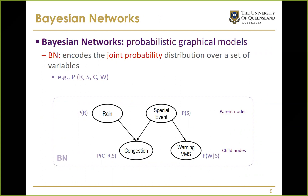With this structure, we can interpret that congestion is affected by rain and special events, and special events also lead to congestion warning VMS. For example, if we observe congestion, we consider it caused by either rain or special events. If we know there have been congestion warning VMS, our belief that special events caused the congestion increases.